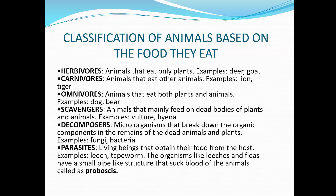All animals do not eat the same type of food. Based on their food habits, animals are divided into categories. Herbivores — from Latin 'herba' meaning vegetation and 'vorare' meaning to eat — are animals that eat only plants. Herbivores have sharp front teeth to bite into food and flat teeth at the back for grinding. Carnivores are animals that eat other animals; 'caro' means meat or flesh, so carnivores means flesh-eating animals.